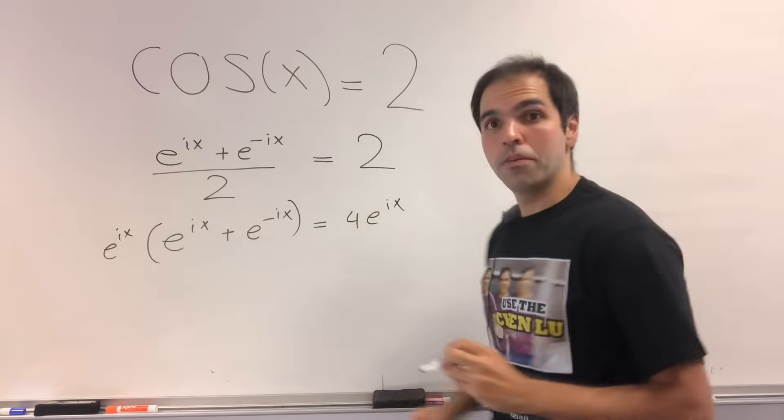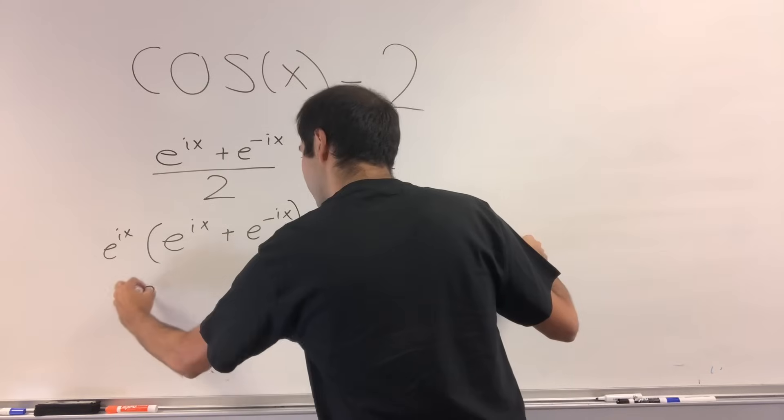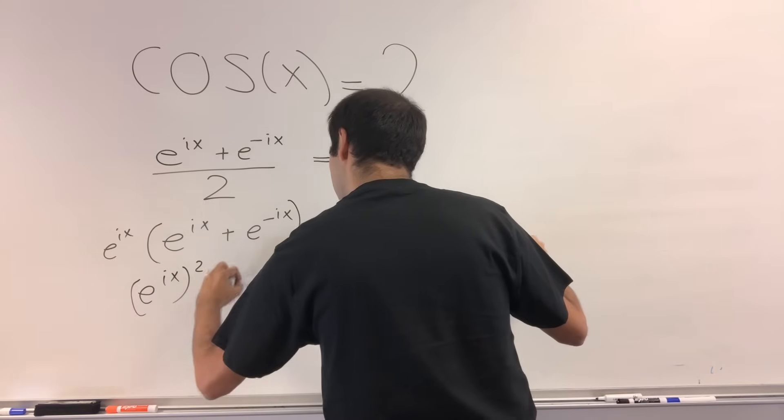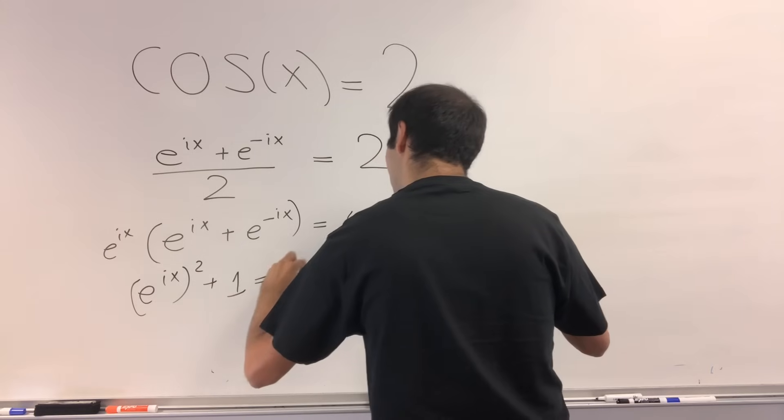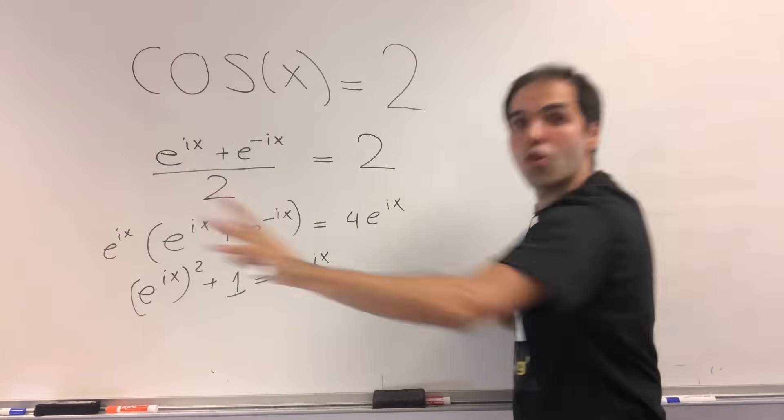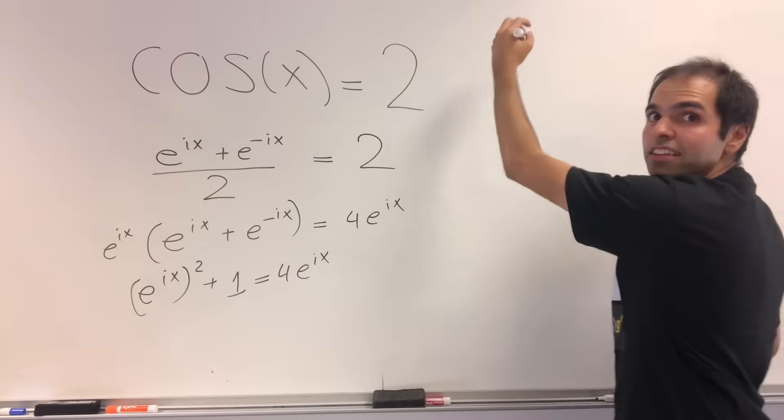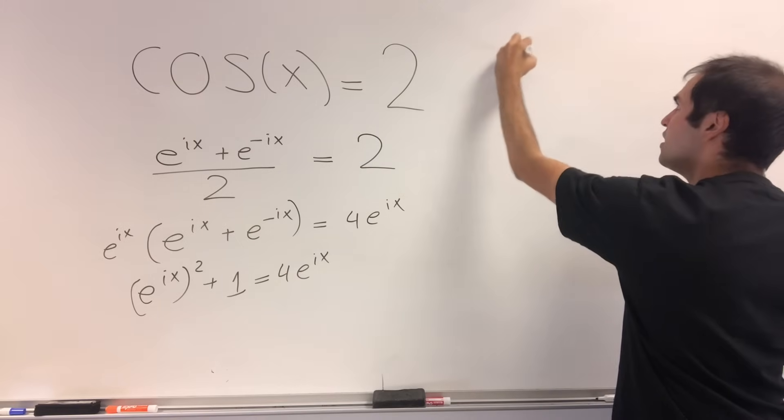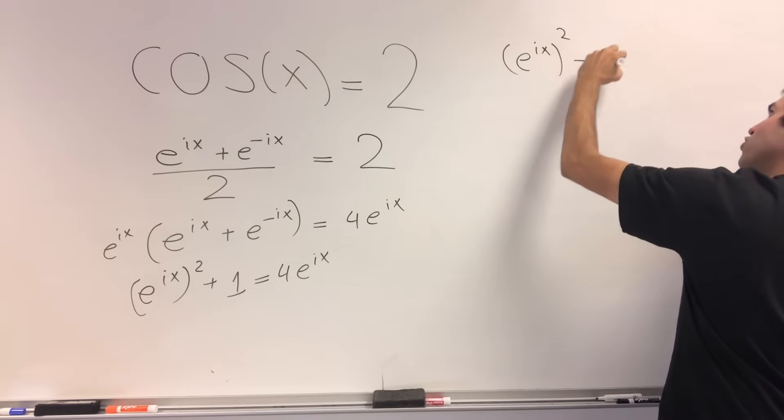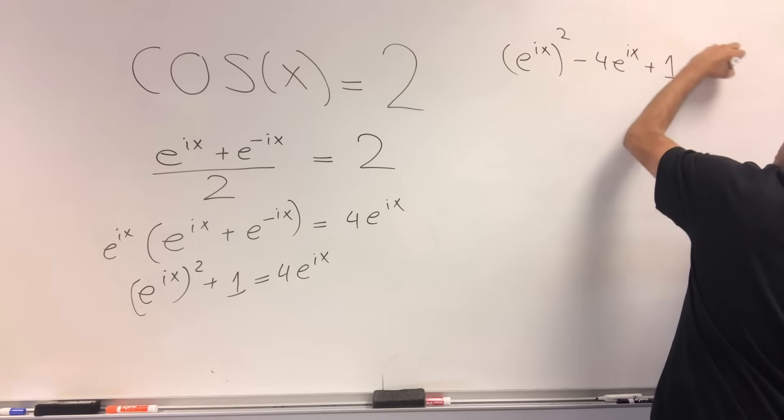Then what this becomes is e to the ix squared plus 1 equals 4e to the ix. And then let's put this 4e to the ix on the left hand side to get e to the ix squared minus 4e to the ix plus 1 equals 0.